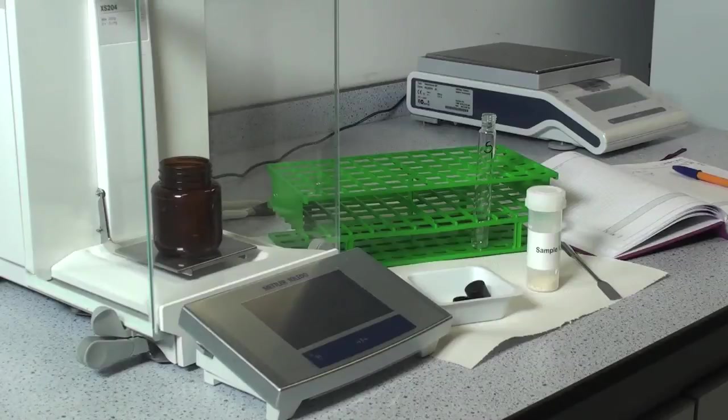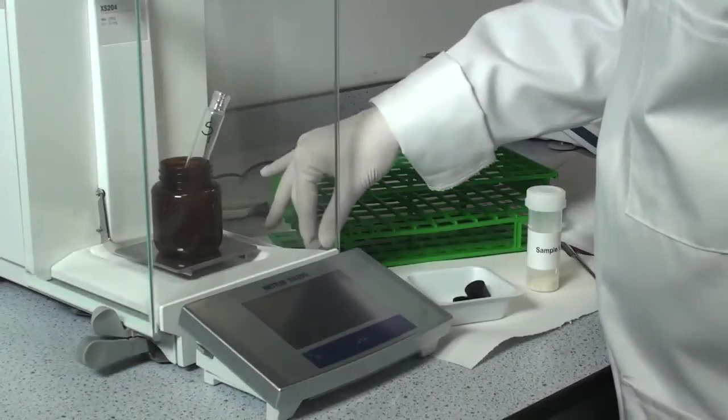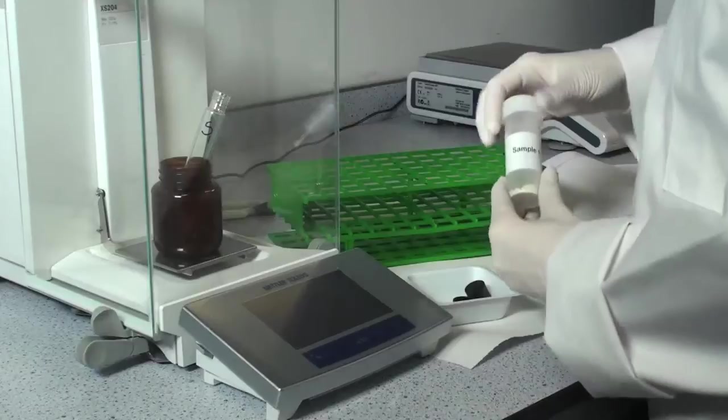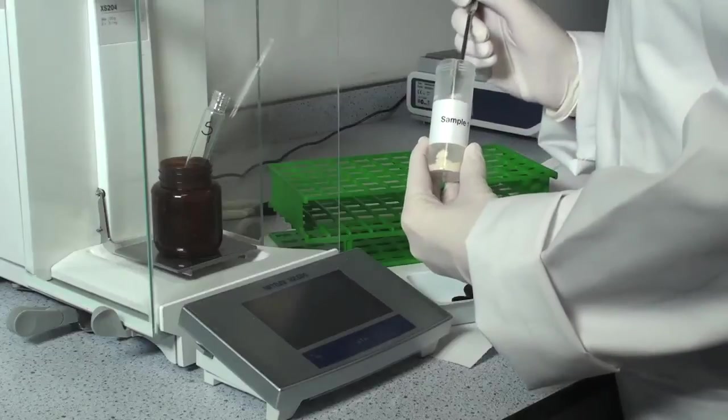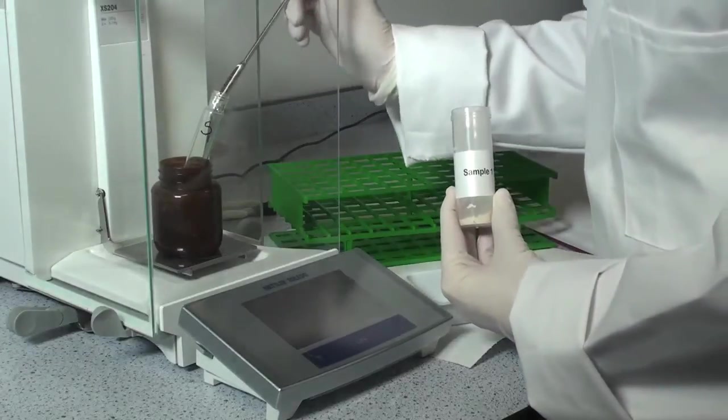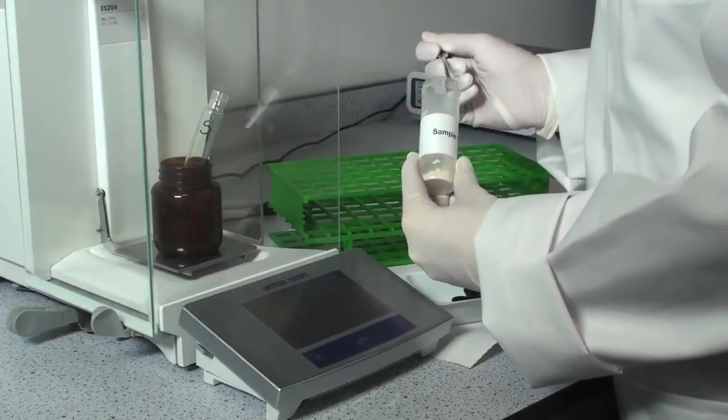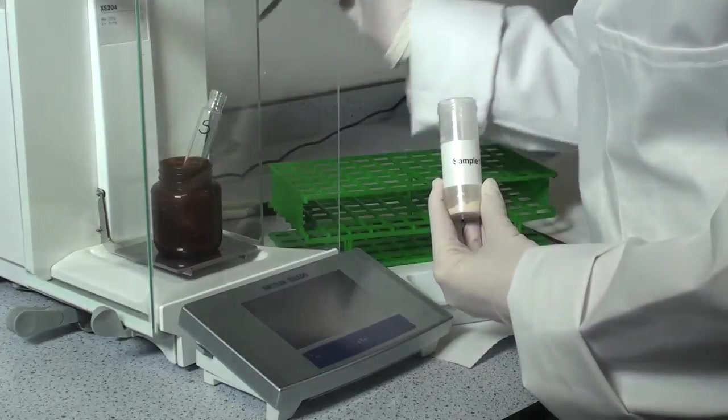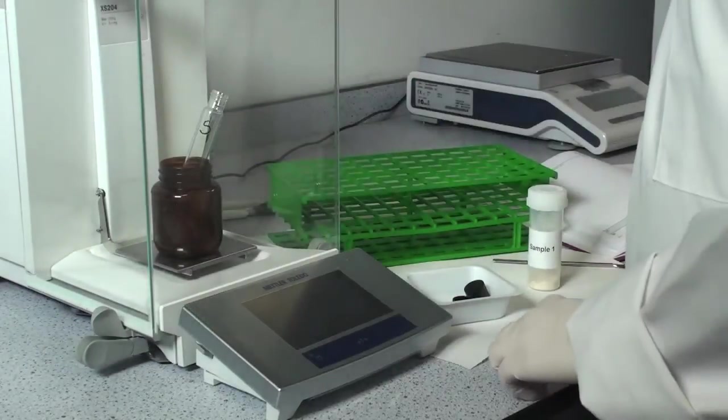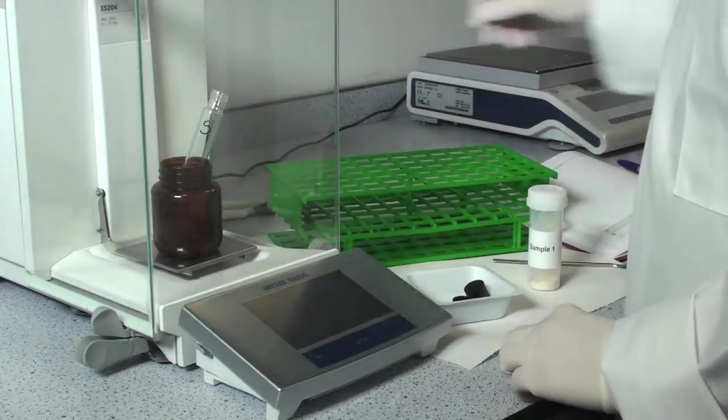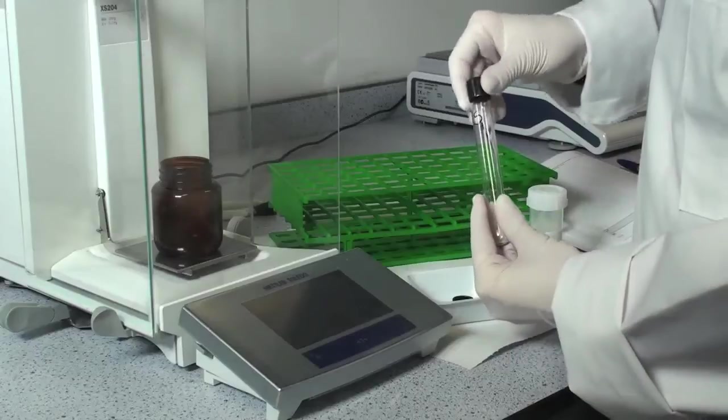Weigh approximately 20 milligrams of sample, correct to the nearest 0.1 milligram, into a 16 by 100 millimeter Fisher brand culture tube. Record the weight. Remove the tube from the balance and tap the tube to ensure that all of the sample falls to the bottom of the tube.